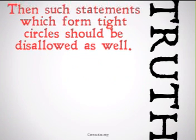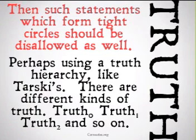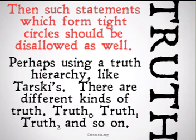What if truth responded by saying that we need to get rid of those tight circles as well? They're problematic too. How are we going to do this? Let's use something like Tarski's Hierarchy of Truth. Tarski says that there are different kinds of truth: truth zero, truth one, truth two, and so on. Note, this is just going to be a basic understanding of what Tarski says about truth.